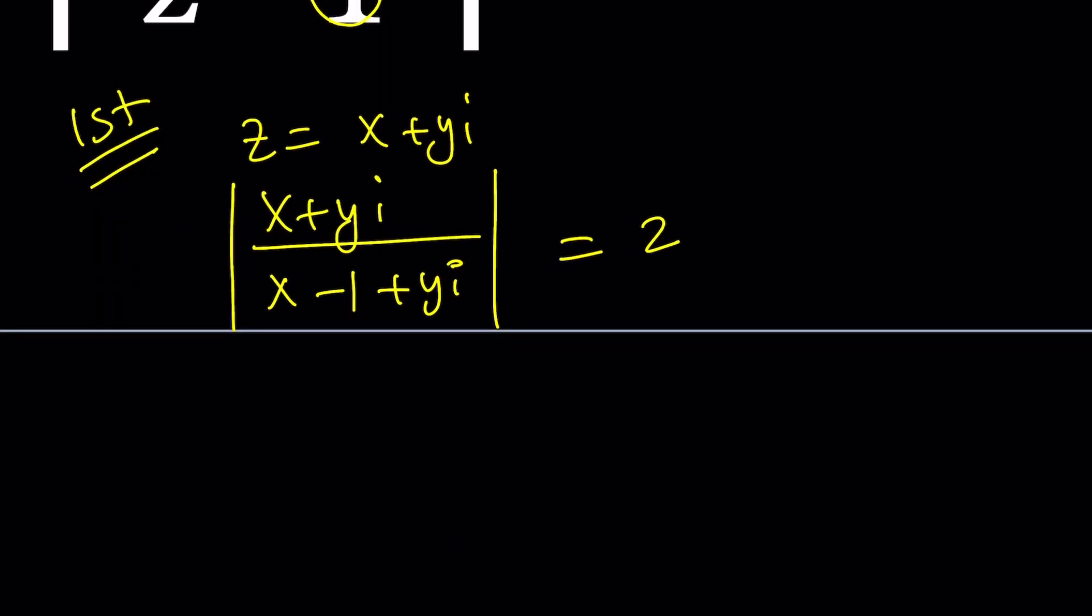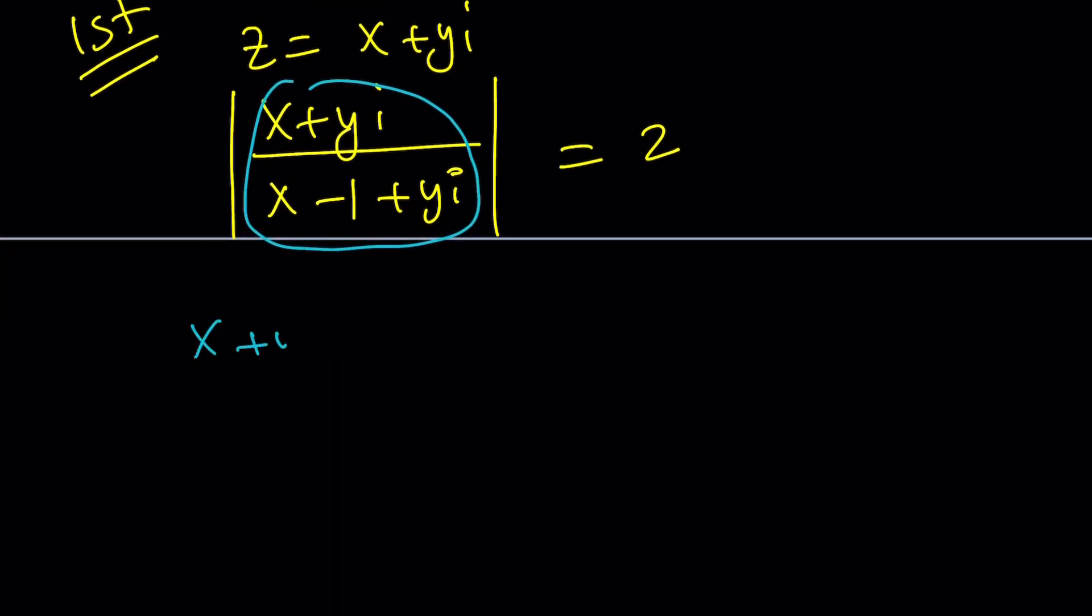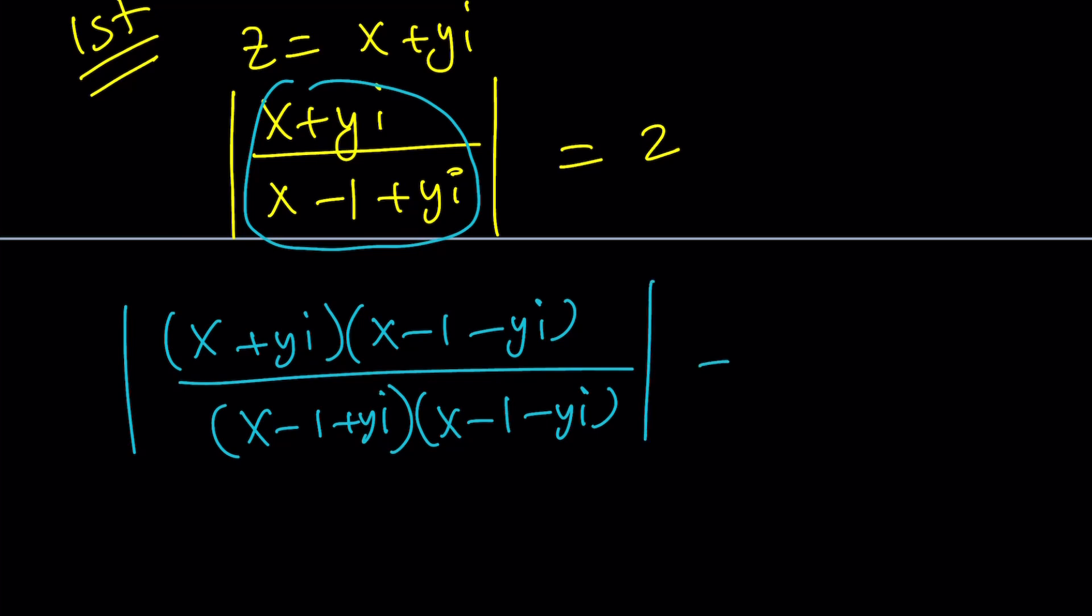With my first method, I'm going to go ahead and use the conjugates. So, the conjugate for the denominator is basically x minus 1 minus yi. You just negate the imaginary part, and you're going to multiply this by its conjugate, and then take the absolute value, and that's equal to 2.